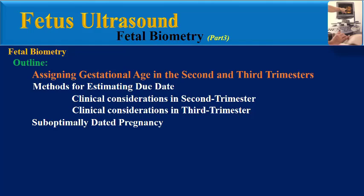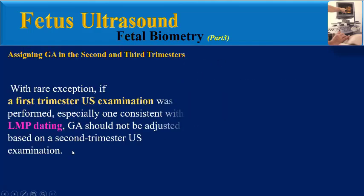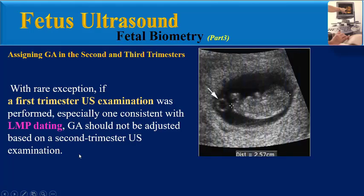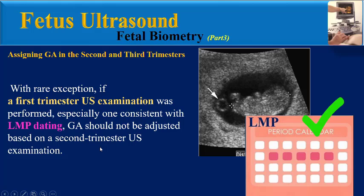The first section is assigning gestational age in the second and third trimesters. With rare exception, if a first trimester ultrasound examination was performed, especially one consistent with LMP dating, gestational age should not be adjusted based on a second trimester ultrasound examination.